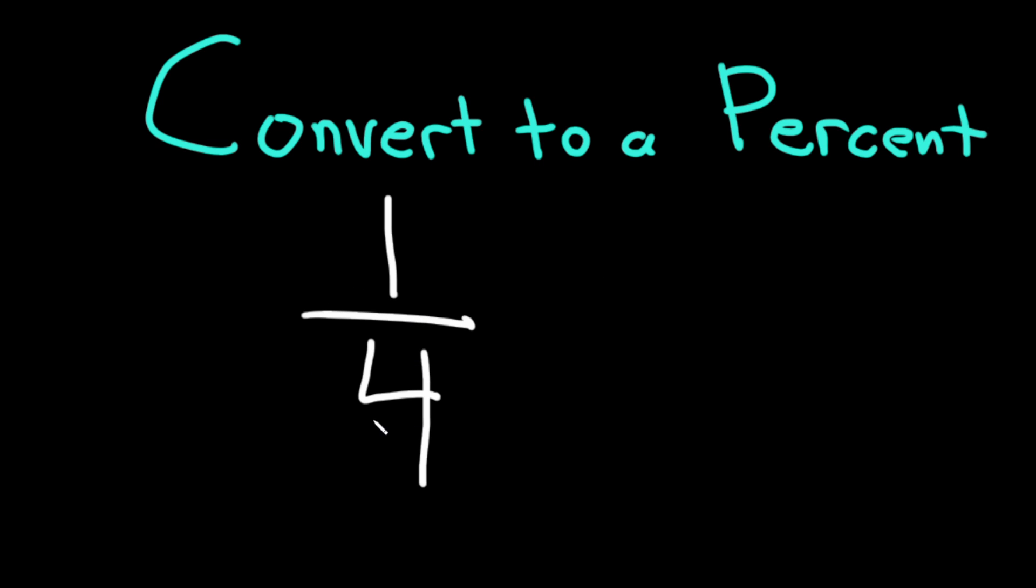So in order to convert this to a percent, one way to do it is to make this number on the bottom a 100. So you ask what do you multiply 4 by in order to get 100? 25. So what you do is you multiply this by 25 over 25.